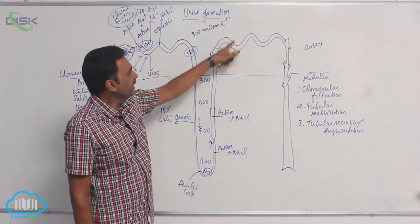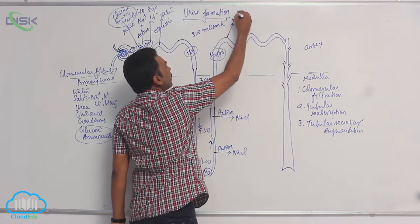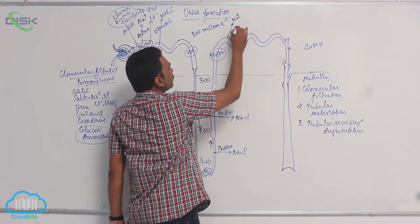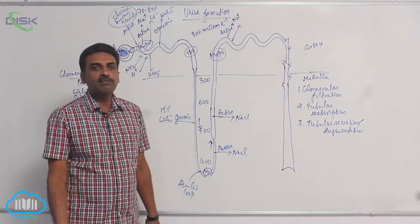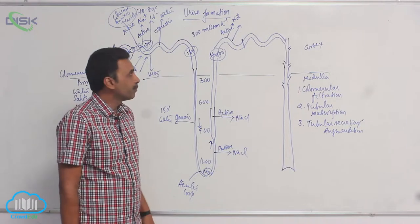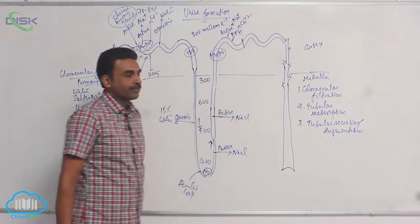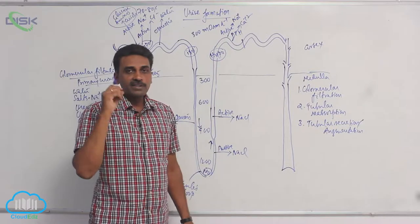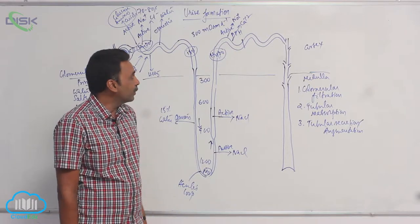In the initial region of the distal convoluted tubule, around 5% of sodium is actively transported out, and chloride ions follow. In the same beginning region, under the influence of parathormone, calcium ions are reabsorbed. If any calcium was lost by filtration, it is taken back into the body under the influence of parathormone at the beginning of the distal convoluted tubule.